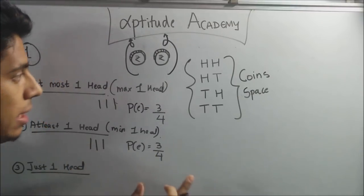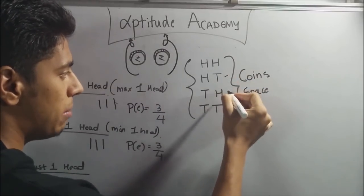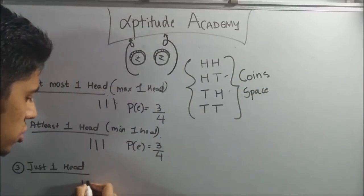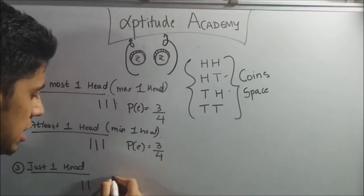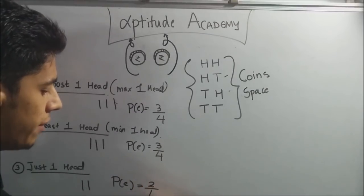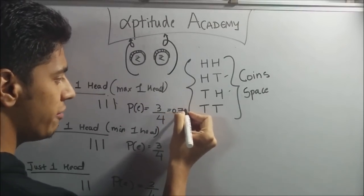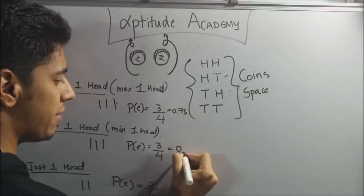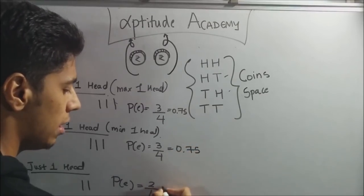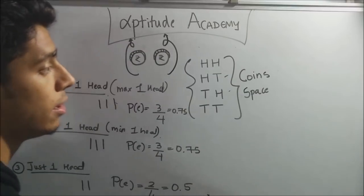Now the last one is just one head. Now which of these has exactly one head? Number two and number three. So you have just two scenarios where this happens. So P(E) here will be two divided by four. Now P(E) three by four is 0.75. Here also 0.75. Here it is 0.5. This is your answer.